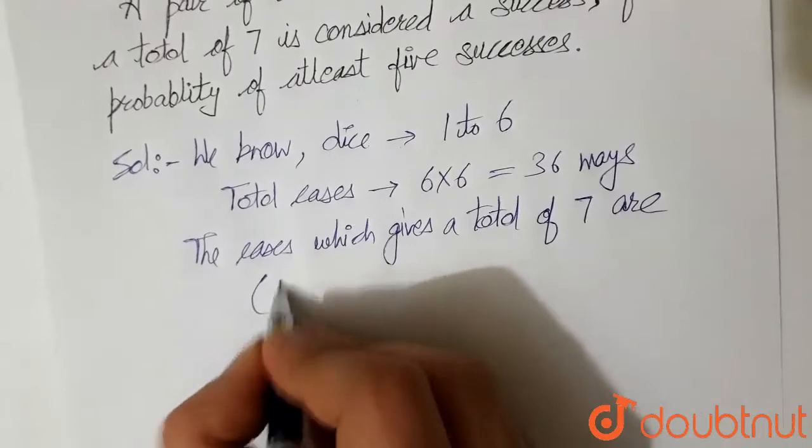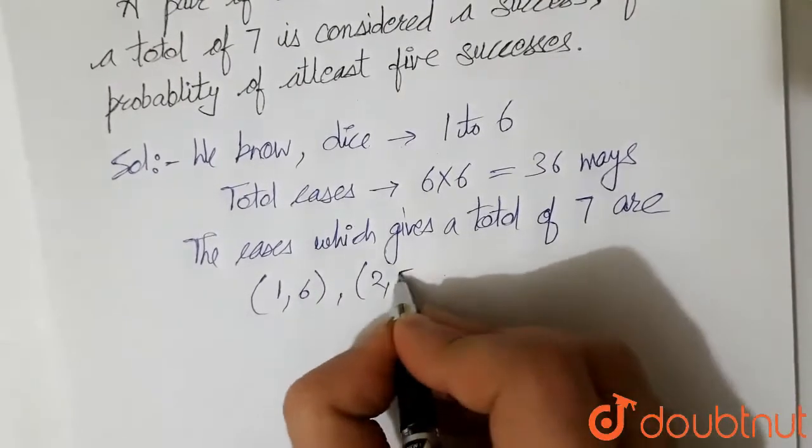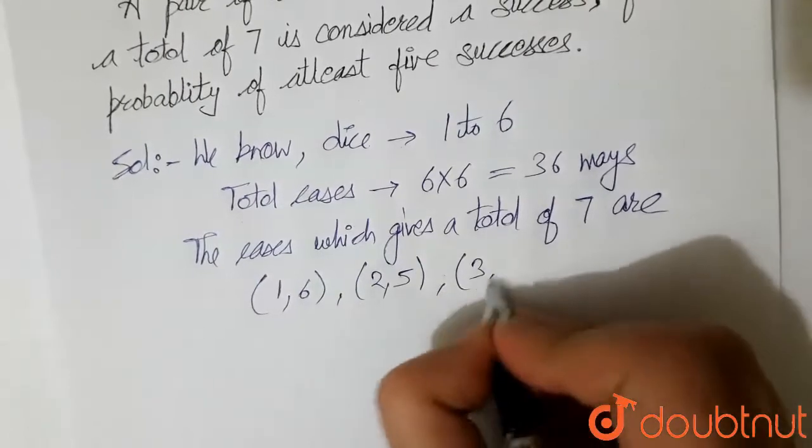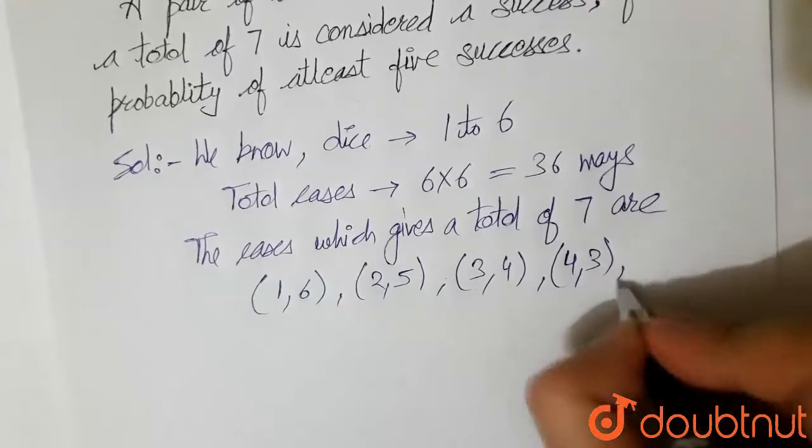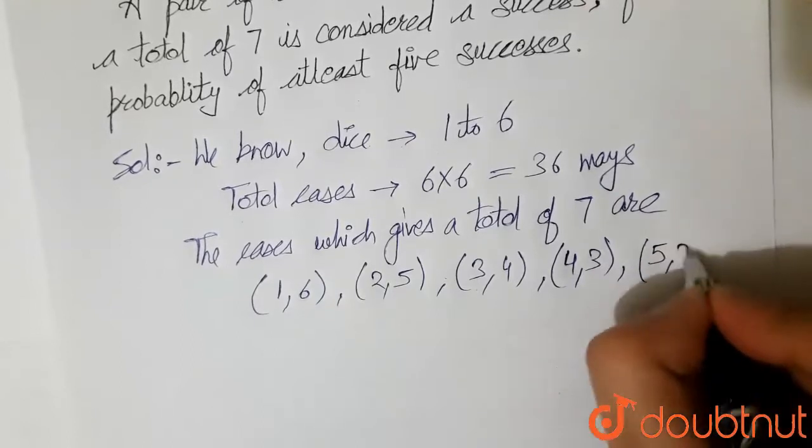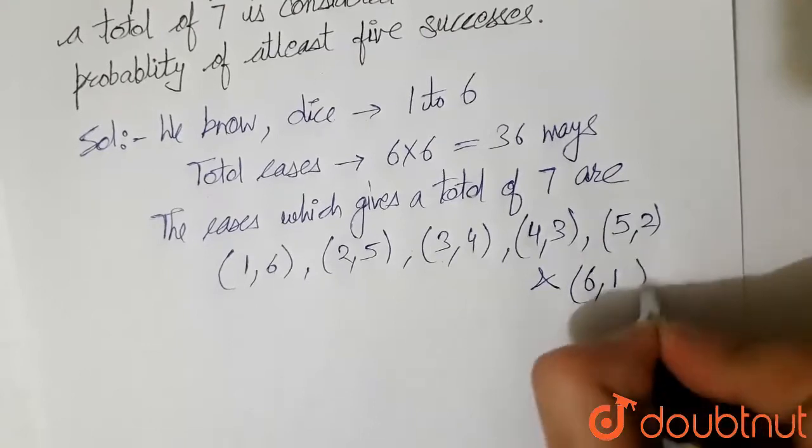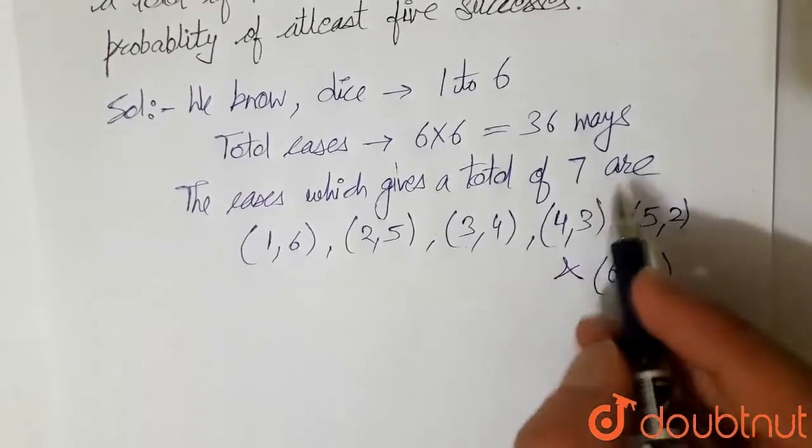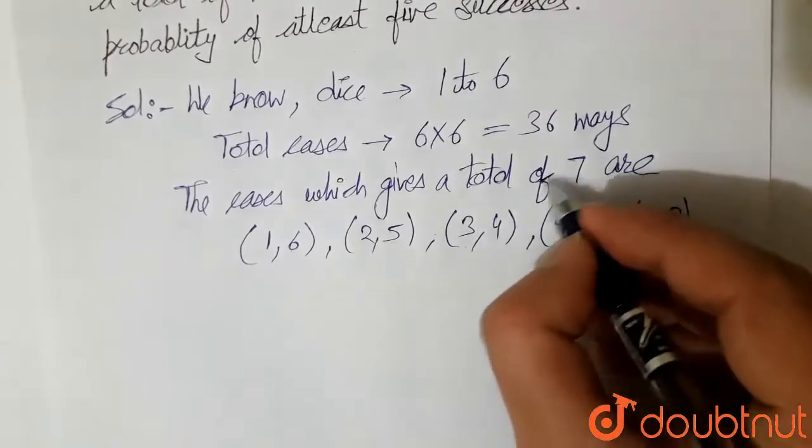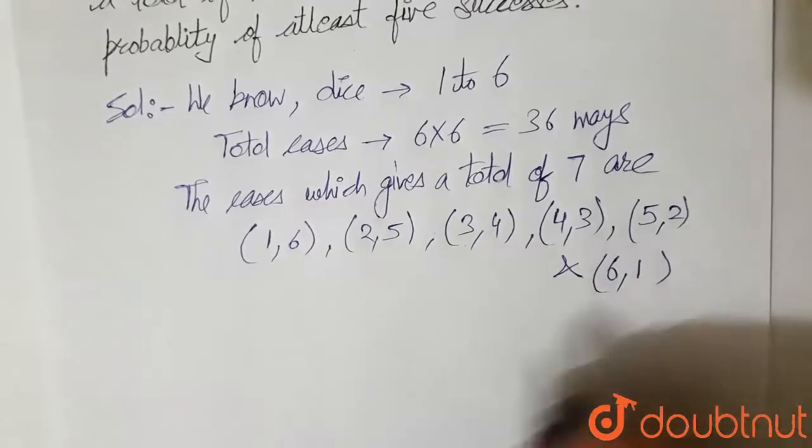It can be 1 and 6, it can be 2 and 5, it can be 3 and 4, it can be 4 and 3, it can be 5 and 2, and it can be last 6, 1. These are the only cases by which we can get the sum of 7. So these are 1, 2, 3, 4, 5, 6 cases.